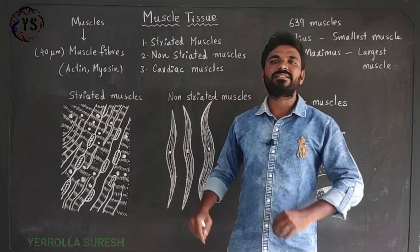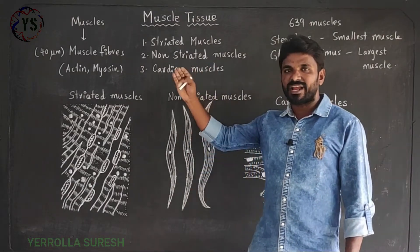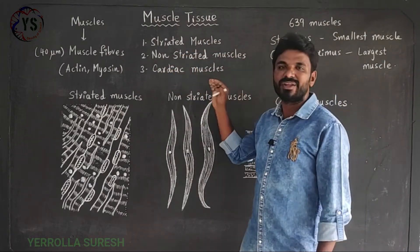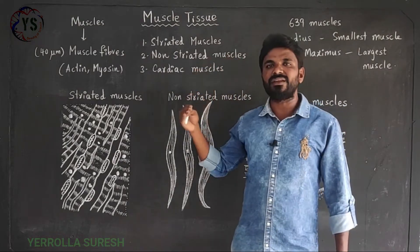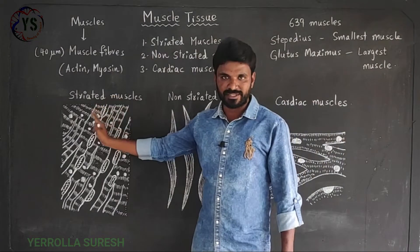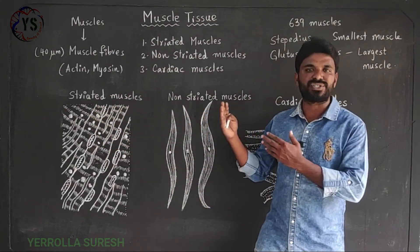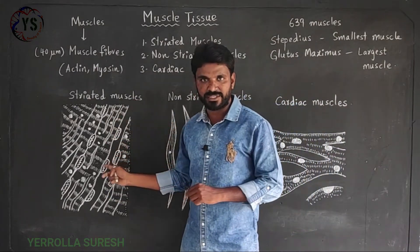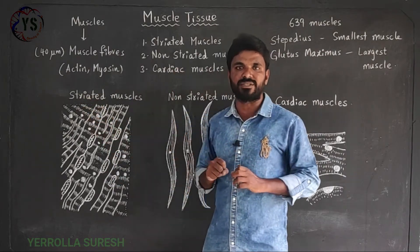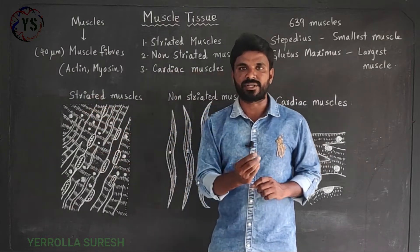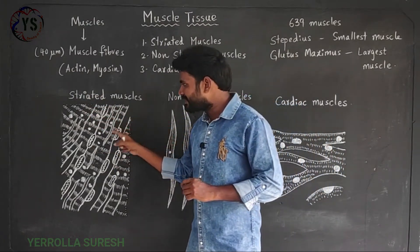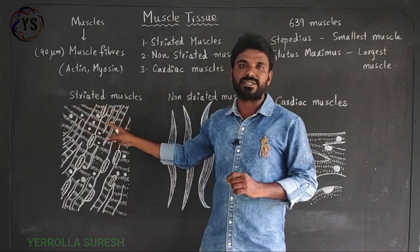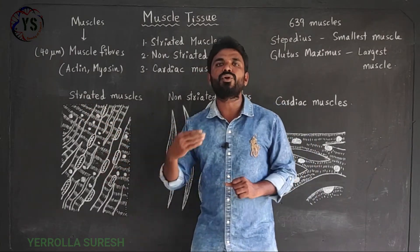Based on structure and functions, muscles are divided into three kinds: striated muscles, non-striated muscles, and cardiac muscles. The word striation means stripes or lines. The muscles which have some stripes or striations on their surface are called striated muscles. Striated muscles contain more nuclei — a greater number of nuclei are present inside striated muscles.